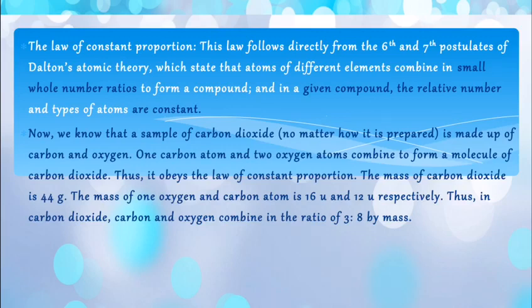Similarly, a sample of CO2, from wherever we take it, the formula will remain the same, that is CO2. It is made up of carbon and oxygen. One carbon atom and two oxygen atoms combine to form a molecule of carbon dioxide, thus obeying the law of constant proportion. The mass of carbon dioxide is 44 grams. The mass of one oxygen and carbon atom is 16U and 12U respectively. Thus in carbon dioxide, carbon and oxygen combine in a whole ratio.